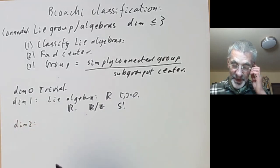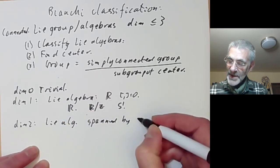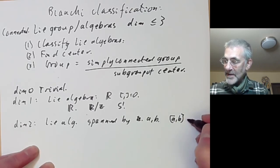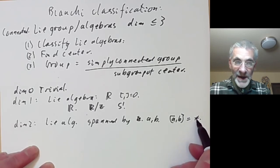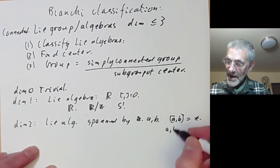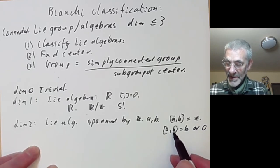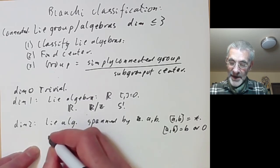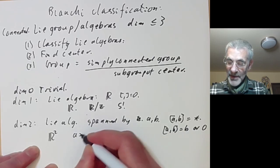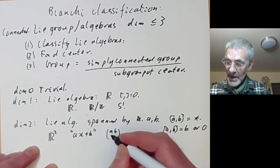In dimension 2, the Lie algebra is spanned by two elements a and b. The only non-trivial bracket is [a, b], which must equal something. We may as well choose a basis so that something equals b — if it isn't, we just choose a different basis. So we may as well take [a, b] = b. Or it might be zero, in which case we have a different case. So there are exactly two possibilities.